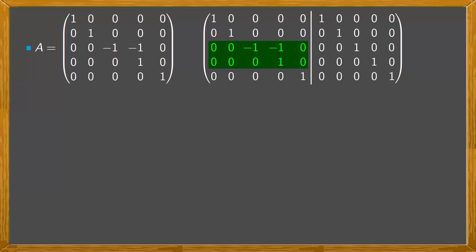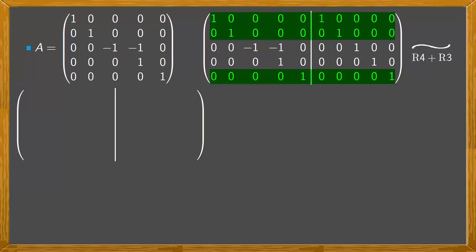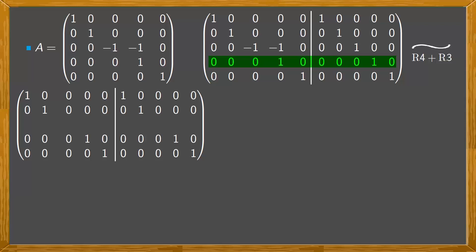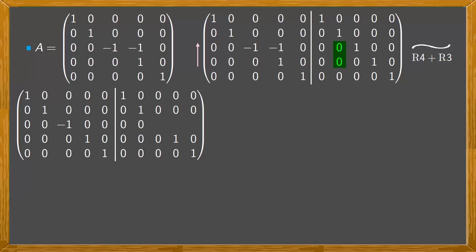We do this by adding the fourth row to the third. We copy the first, second, and fifth rows because they won't need to change, and also the fourth row since it's the one making the zero. Instead of the third row, we put the sum of the fourth row plus the third, reading from bottom to top: 0+0=0, 0+0=0, 0+(−1)=−1, 1+(−1)=0, 0+0=0, 0+0=0, 0+0=0, 0+1=1, 1+0=1, 0+0=0.